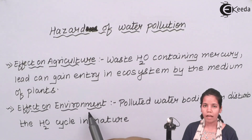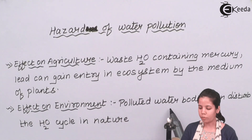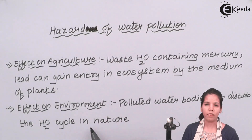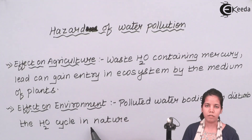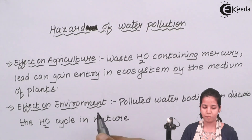Effect on environment: polluted water bodies can disturb the water cycle, or the normal water pattern in the atmosphere. The way water cycles are formed — from water vapors rising into the air and then rain coming down — that cycle could be disturbed.